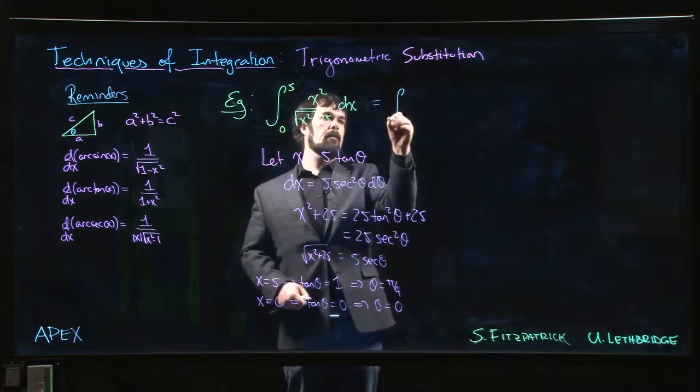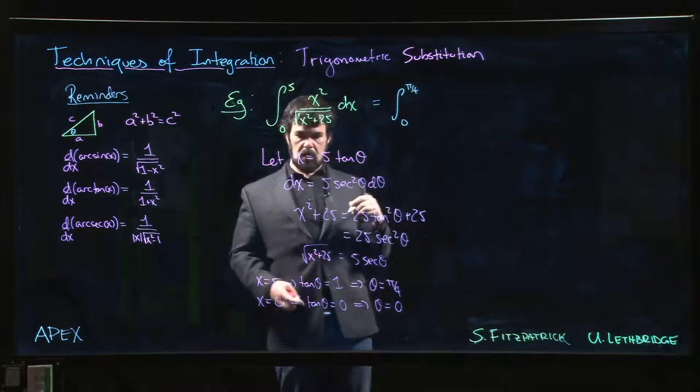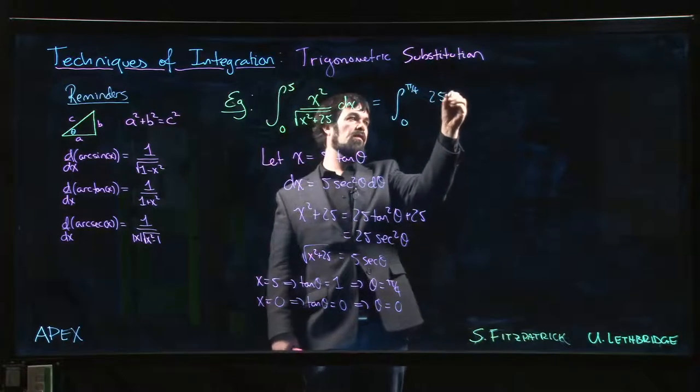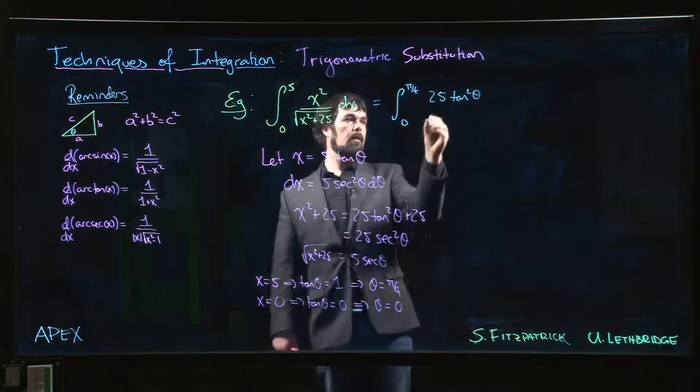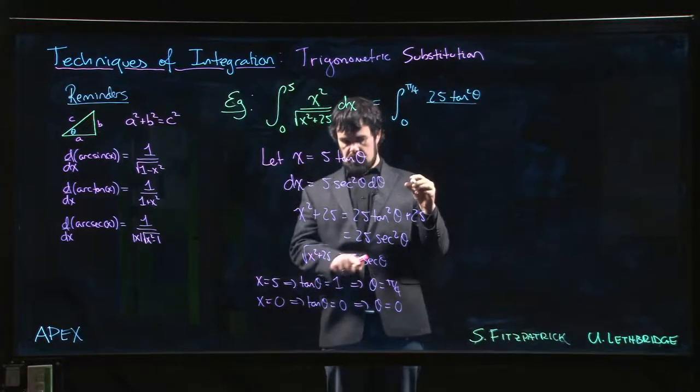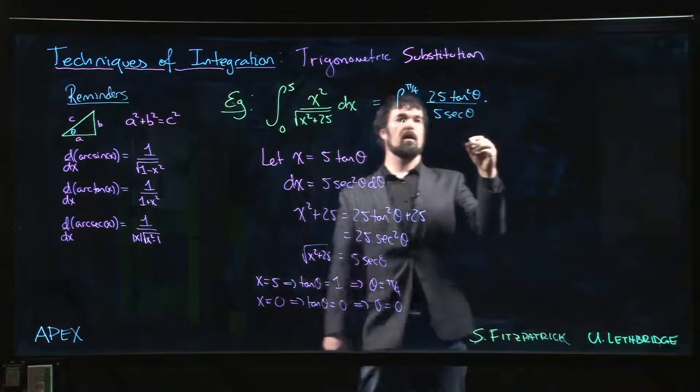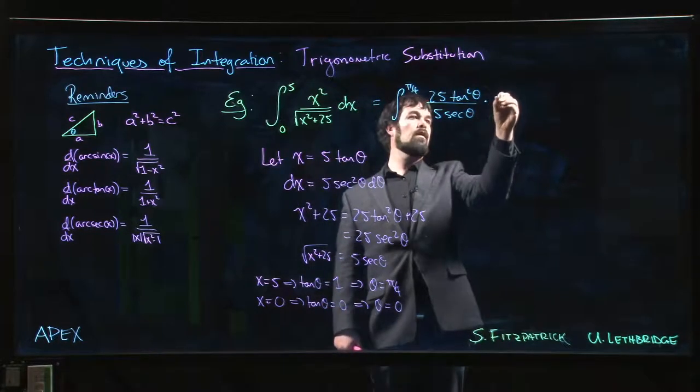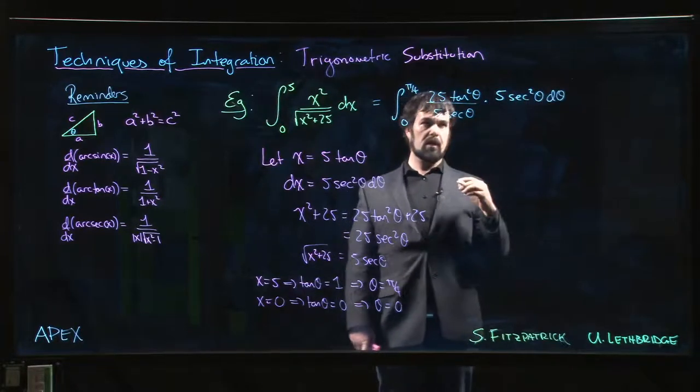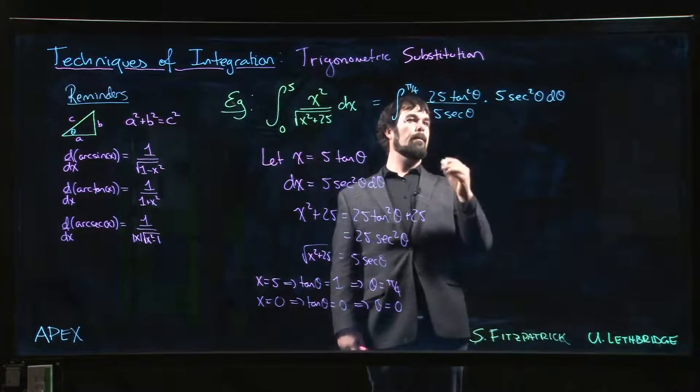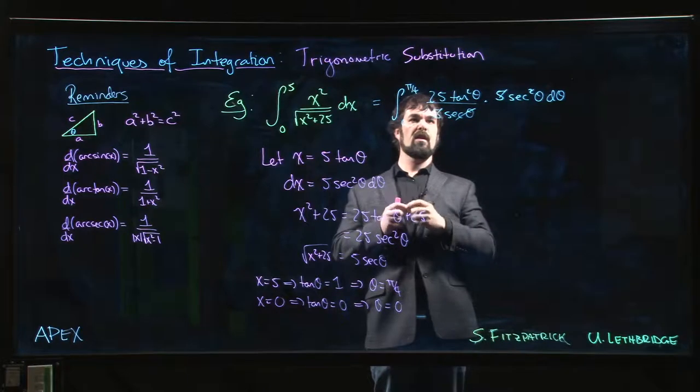So this becomes the integral from 0 to pi over 4. x squared becomes 25 tan squared theta, that denominator is 5 secant theta, and dx is 5 secant squared theta d theta. And they've done it to us again.